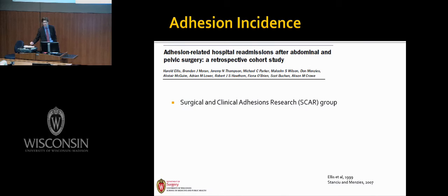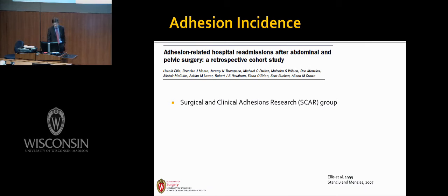The SCAR — the Surgical and Clinical Adhesions Research Group from the United Kingdom — follows a small but stable population of the entirety of Scotland, with a migration rate of less than 1%. They were able to follow over 30,000 patients that underwent open abdominal surgery over 10 years and reviewed them for re-admissions. They found that 34% of patients were admitted an average of 2.1 times in that period, possibly or directly related to adhesions — 5.7% directly from adhesions, 22% within the first year, and almost 4% of re-admissions resulted in re-operation.